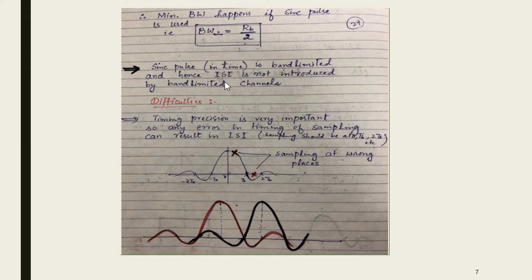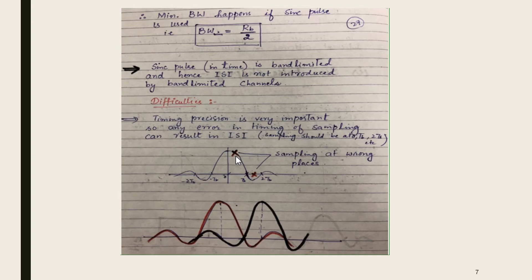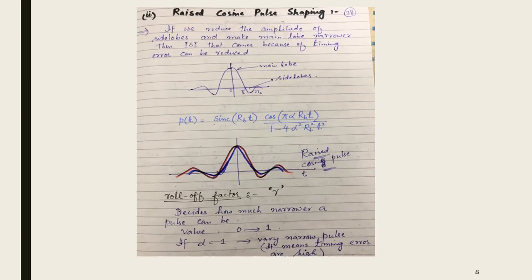The sinc pulse is band-limited in time, so ISI is not introduced by a band-limited channel. However, timing precision is very important: any error in timing of sampling can result in ISI, since sampling should be at t = nTb. If we have wrong sampling points due to timing error, the sinc pulses will start overlapping such that at t = 0 we do not get maximum amplitude and all zero crossings are disturbed. It is very difficult to achieve such precision in timing, so another pulse shape was introduced: the raised cosine pulse.